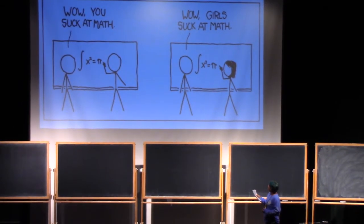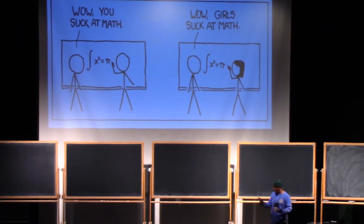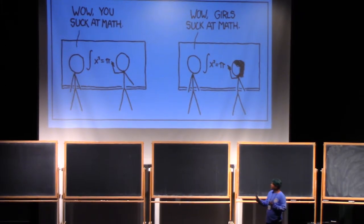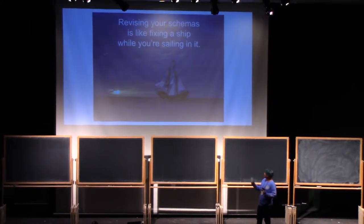So for example, if one of your schemas is that girls are bad at math, you can end up thinking like this. You take in new evidence, but it just confirms what you already believe. So when you're using your current schemas to evaluate your current schemas, how do you know when you need to revise them? It's actually really hard.